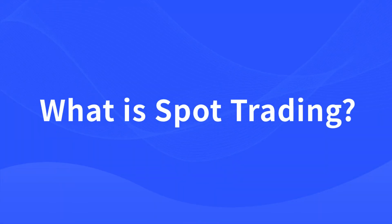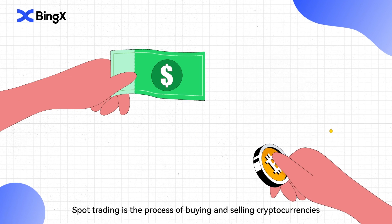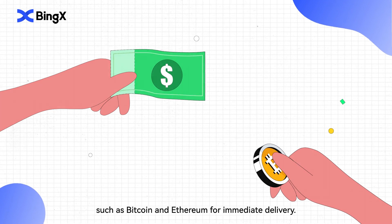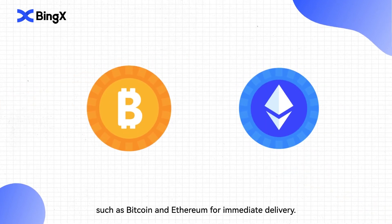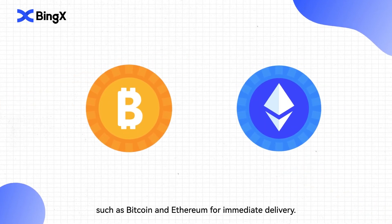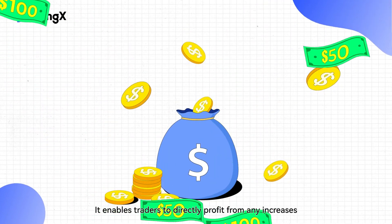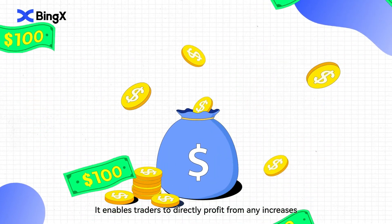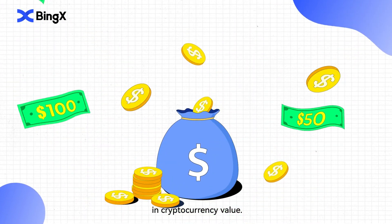What is Spot Trading? Spot trading is the process of buying and selling cryptocurrencies, such as Bitcoin and Ethereum, for immediate delivery. It enables traders to directly profit from any increases in cryptocurrency value.